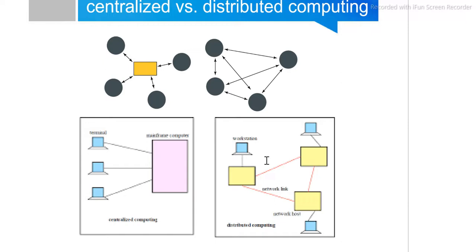Primarily we used mainframe systems, where different terminals submit all jobs to the mainframe and they are executed and used by other users. That is the meaning of centralized computing. Nowadays, as technology advances, we are moving towards distributed computing, though in some applications uniprocessor or centralized computing is still used.